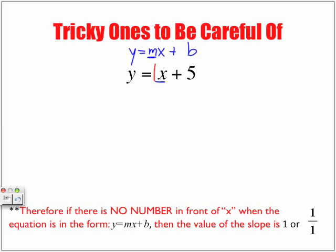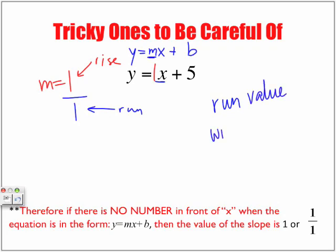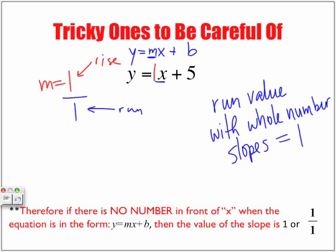And as we said, if the slope is equal to 1, remember what we said? That the whole number represents the rise. Now, notice how there is no run value, but the run value is always 1. So, the run value with whole number slopes is equal to 1, always.